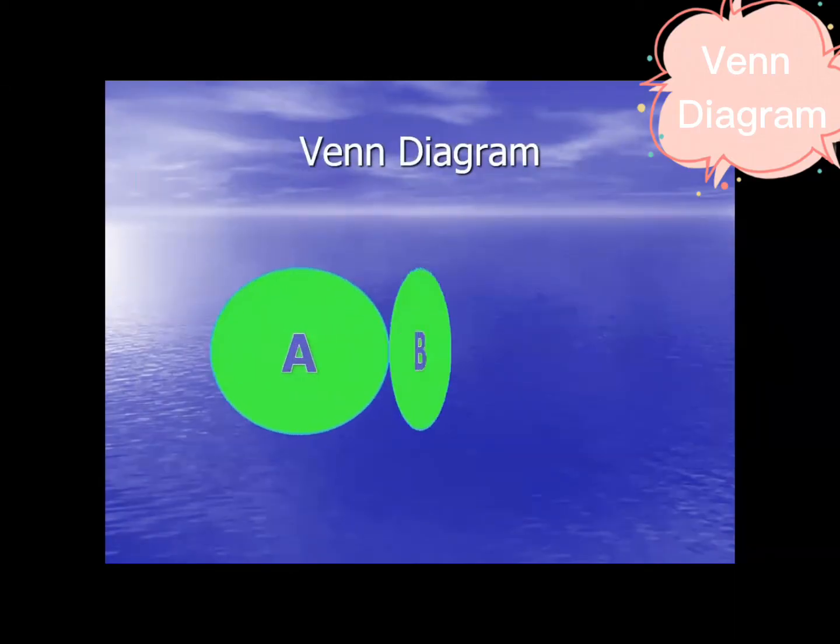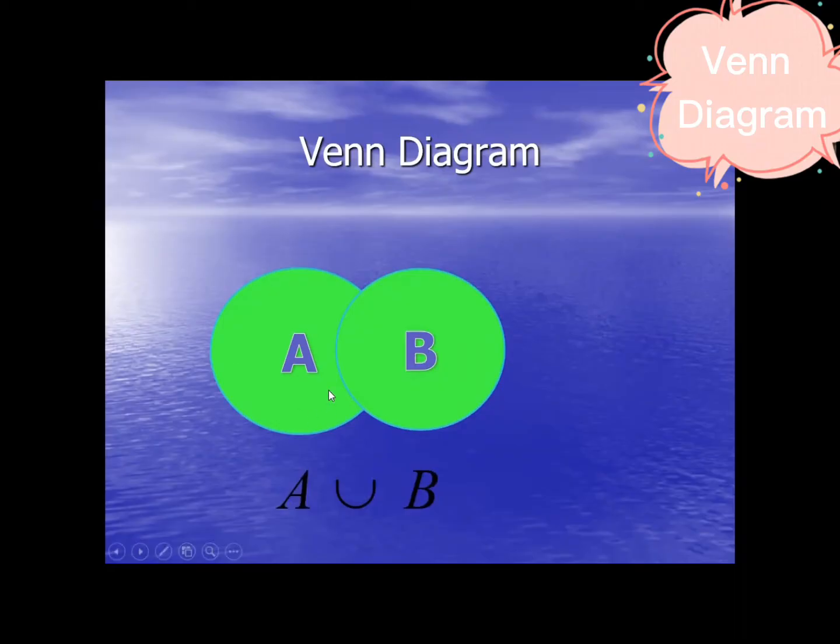Starting from union. From the definition of union, the set of all x such that x is an element of A or x is an element of B. So all the elements found in A and B.